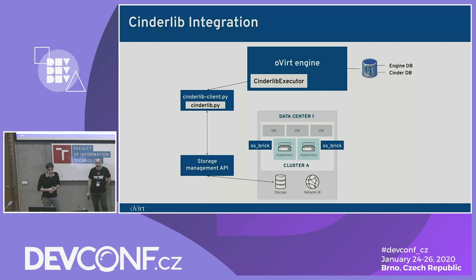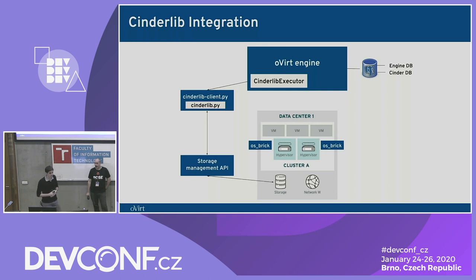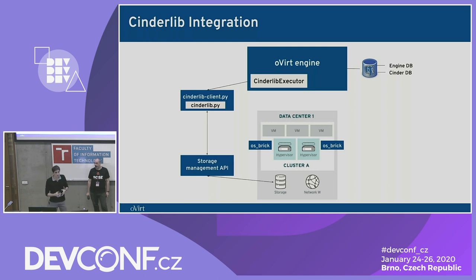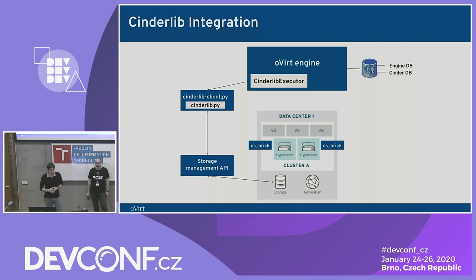The second constraint is metadata persistency. We are creating volumes, snapshots, extending volumes, cloning, and deleting — we need to know what operations have been done and persist them. The engine already has a Postgres database, so we just added a new schema, the Cinder database, and we provide Cinderlib all the communication info to persist its metadata there. All storage operations are done without the hypervisor being involved. The only operation that requires hypervisor involvement is when running a VM — then we need to perform a remote attach and detach of the volume to the virtual machine. For doing that, we use OS-Brick, a Python package created by OpenStack.